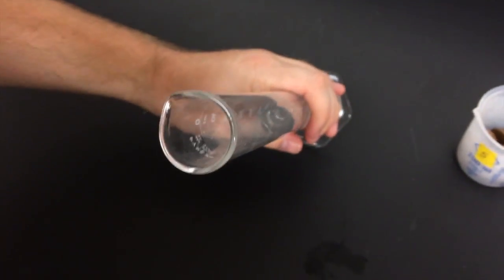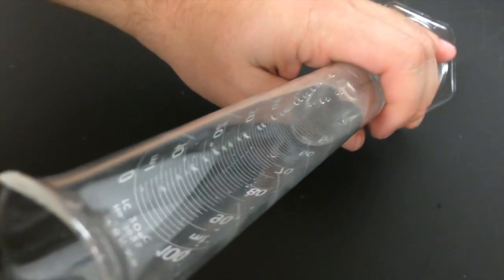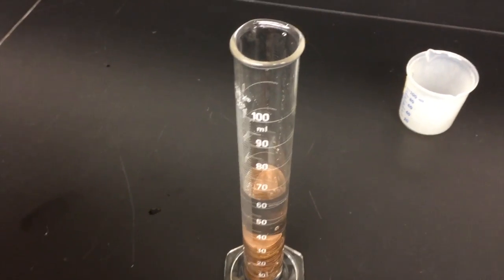This portion works really well if you have a lab partner hold the cylinder at about a 45 degree angle while you slide pennies down the cylinder, as you can see here. This works to reduce the water splash that you see and also losing water out of the cylinder.